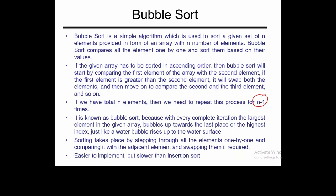These are basically the number of passes required. Suppose we have a list with index values 1, 2, 3, 4, 5 and numbers 12, 6, 2, 9, 4. It is called bubble sort because with every complete iteration, the largest element in the given array bubbles up towards the last place, like a water bubble rising to the water surface. Every largest element of that particular list will pop up to the last position.